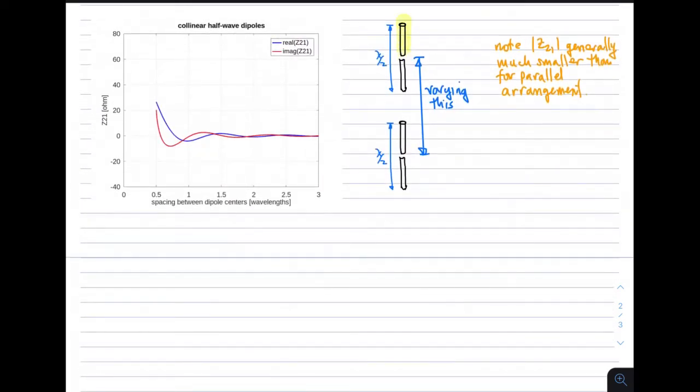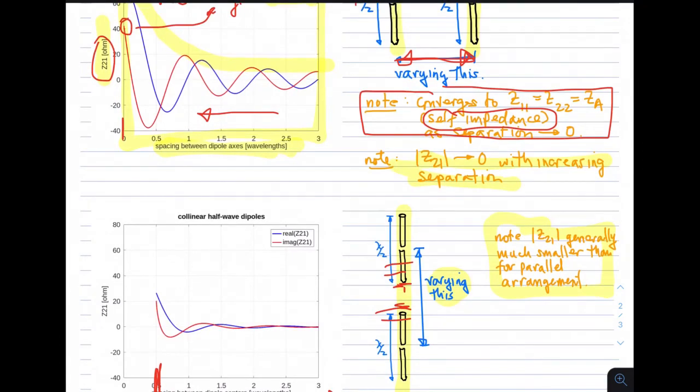The second canonical case we'd like to consider is dipoles arranged collinearly, where they are not only parallel but along the same axis. In this case, we will vary the separation between the dipoles. The separation can't go to zero because that would correspond to varying lengths of the dipole arms overlapping, and the expression is not valid for that case. We'll start at 0.5 wavelengths, which is as close as we can put these together without overlapping arms. 0.5 wavelengths corresponds to the case where the tips are touching. What we see in that case is that the mutual impedance is much smaller than for the parallel arrangement. The mutual impedance quickly dies off. It starts off lower and dies off further beyond that point.